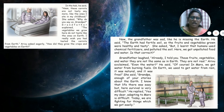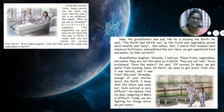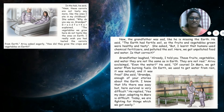She asked, 'But I learned that humans used chemical fertilizers and polluted the soil. Here we get unpolluted food and water. Is that correct?' Grandfather laughed. 'Already I told you — these fruits, vegetables and water are not the same; they are not real.' Arumadhi exclaimed — here 'exclaimed' refers to surprised. 'Even the water?' He said, 'Of course, on Mars we get water from burning fuels.'